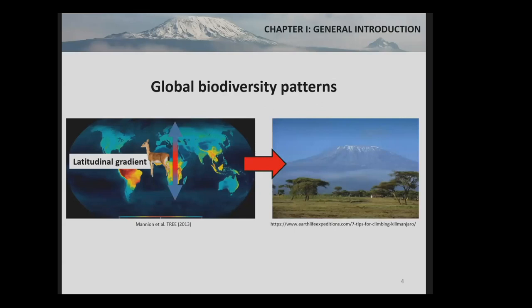Even though the latitudinal gradient in diversity belongs to one of the best described patterns in ecology, the mechanisms behind this pattern are controversial until today, and many hypotheses have been proposed to explain it. Elevation gradients — mountains — are model systems to study broad-scale patterns of biodiversity. Because of their limited spatial extents, the many separate ranges worldwide, and the uniformity of change in abiotic factors with elevation, mountains offer many opportunities for hypothesis testing.